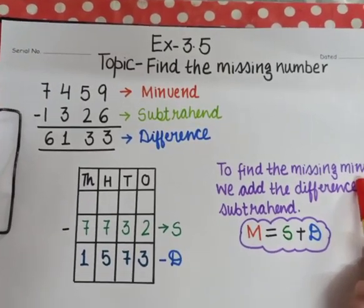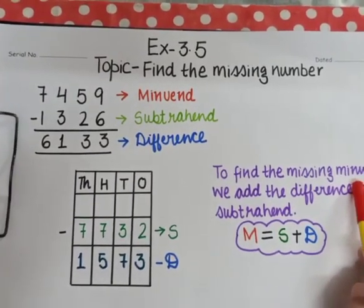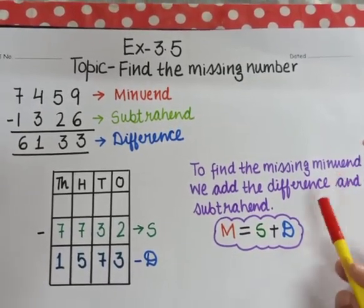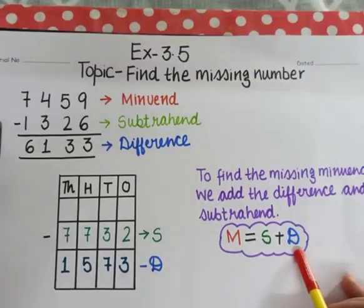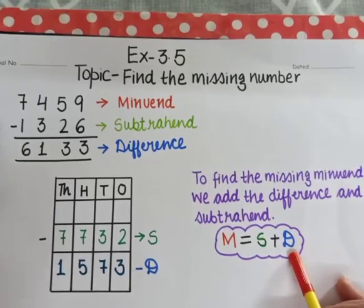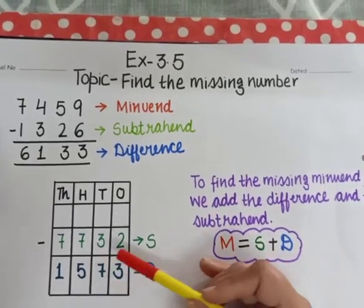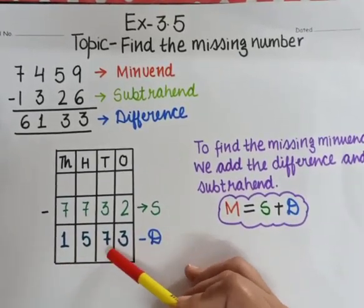So for finding the missing minuend, we have one formula. For finding the missing minuend, we add subtrahend and difference. I am repeating again, we will add subtrahend and difference. Here my subtrahend is 7732 and difference is 1573.